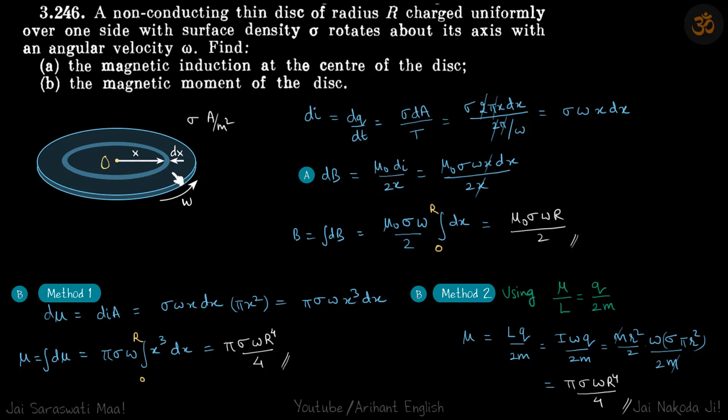Magnetic moment is Ia. So small magnetic moment because of this strip is small current through the strip times area of the whole circle. di into area, where di comes from here and area is πx². Again we integrate this from 0 to r to get our magnetic moment.